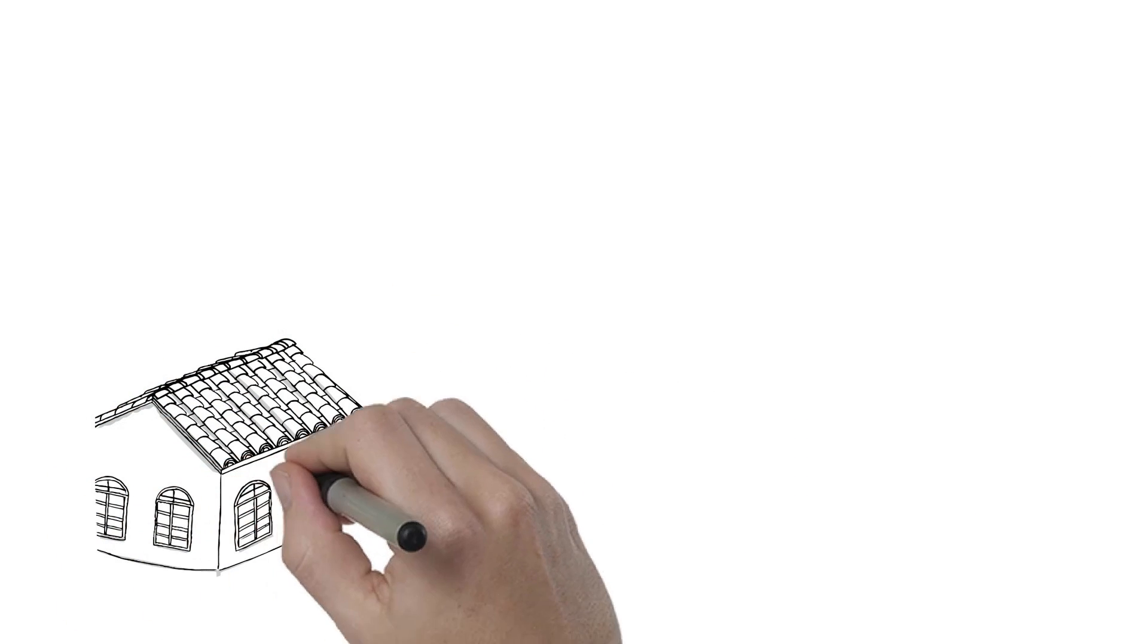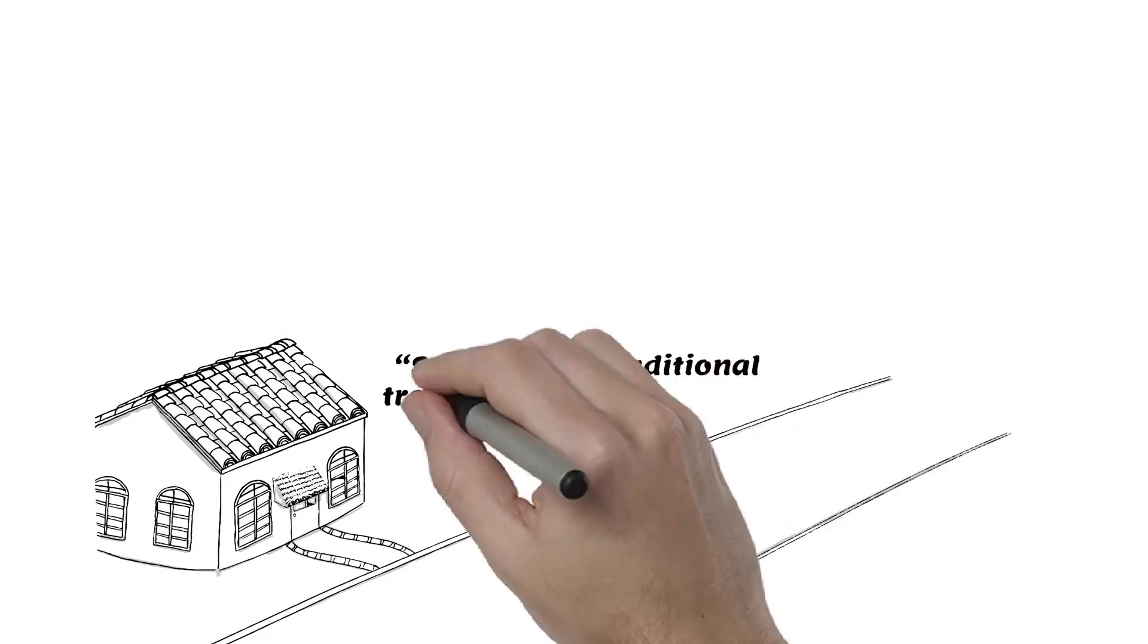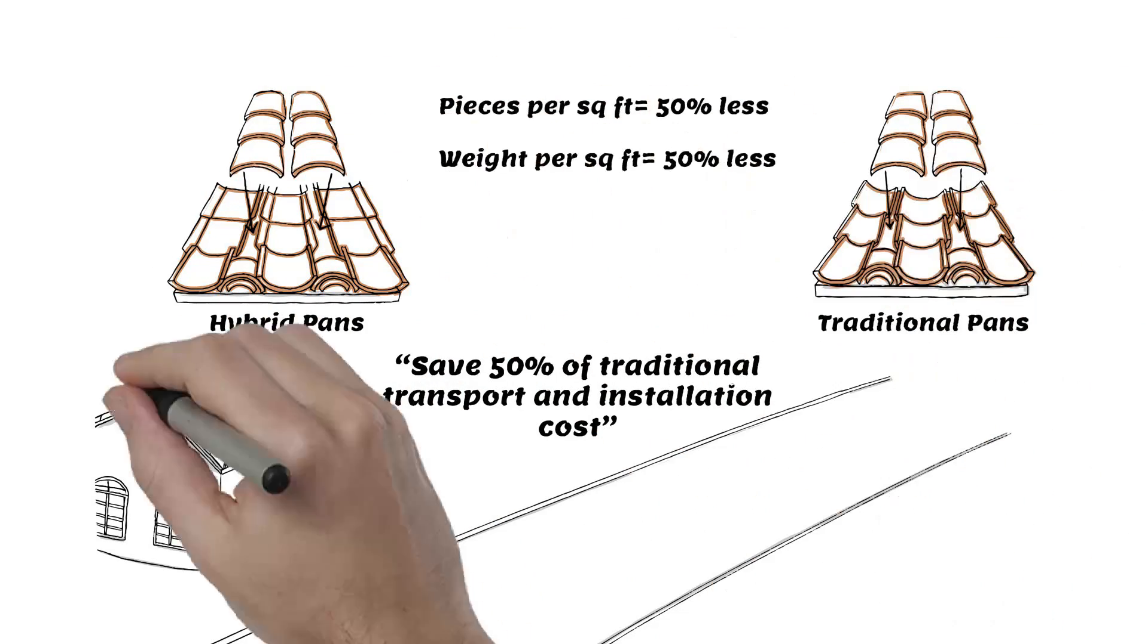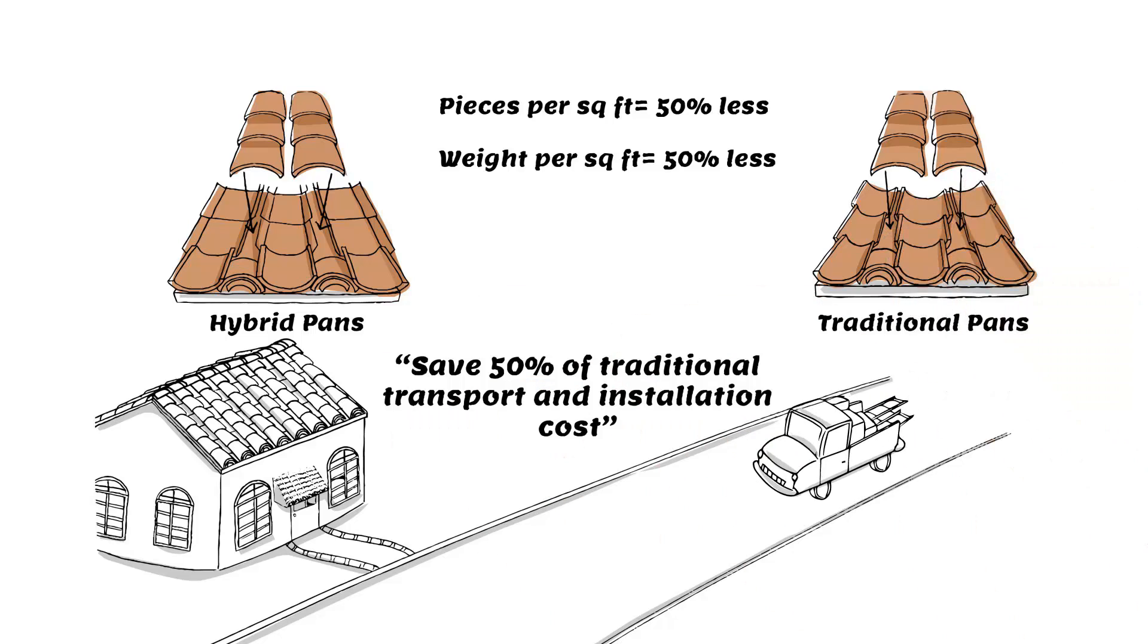These universal pans weigh approximately 50% less than traditional pan systems, making transport and installation less laborious, in addition to eliminating up to 50% of the costs associated with these factors.